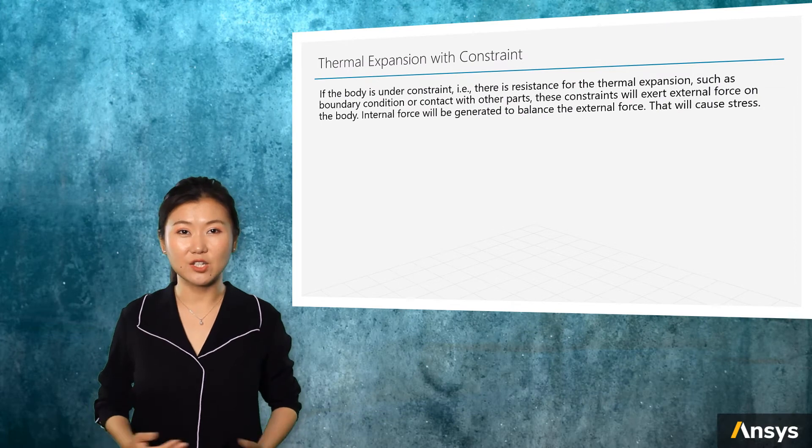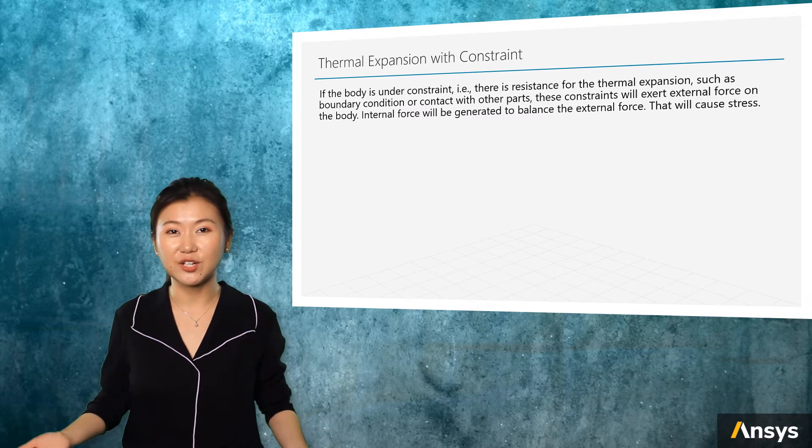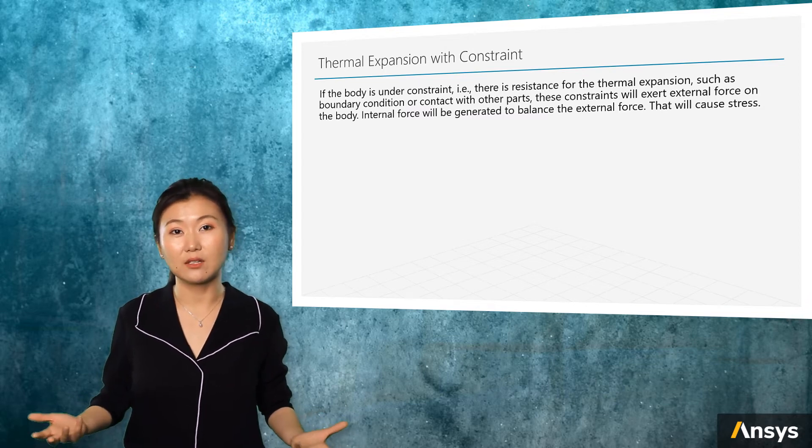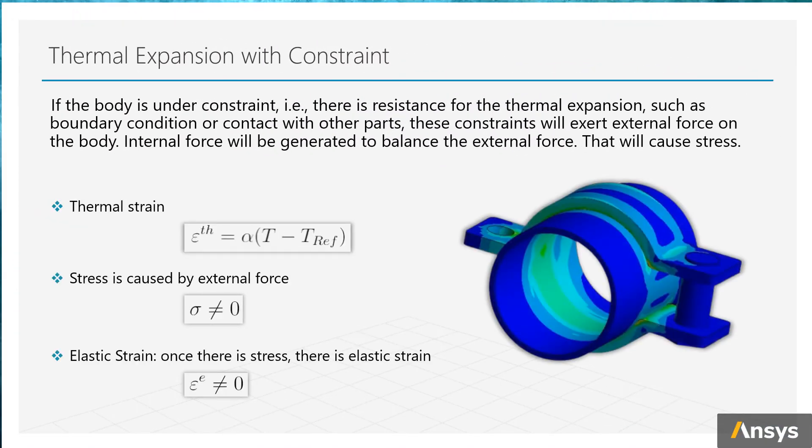Apparently, if there is a constraint for the body, there will be resistance for the thermal expansion from either boundary conditions or contact with other parts. These constraints will exert external force on the body, and internal force will be generated to balance the external force. This will cause stress, and once there is stress, there is elastic strain.